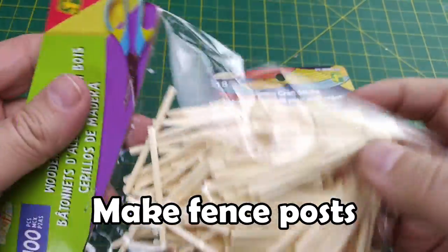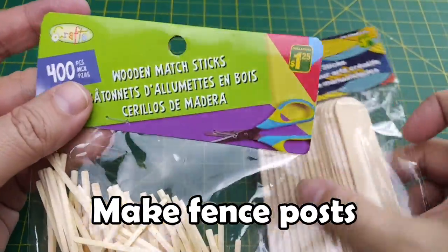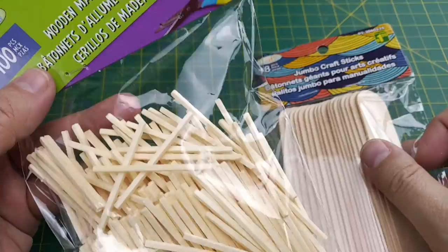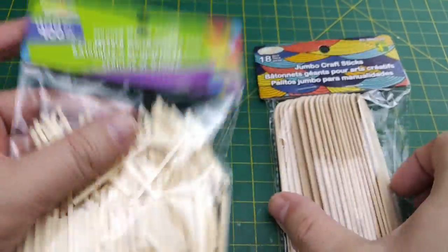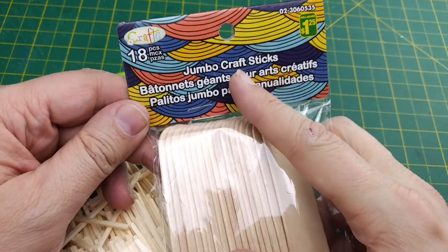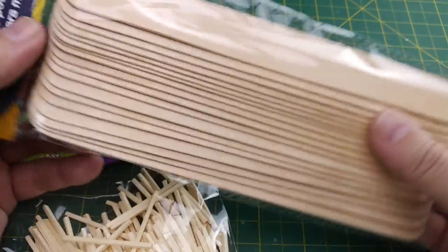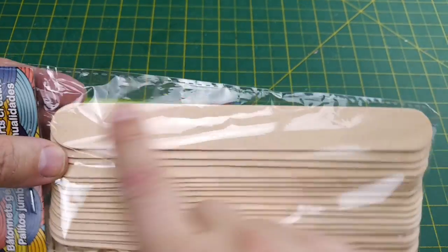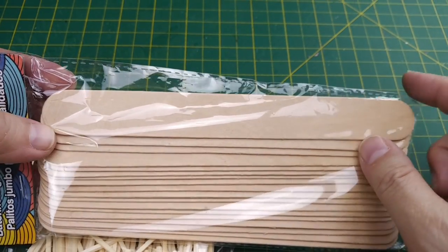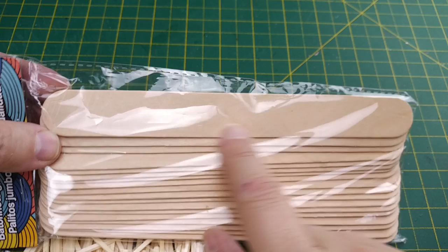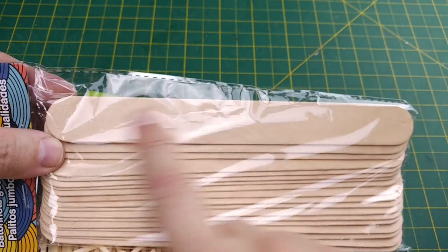Our supplies for our fences are quite basic. We have some wooden matchsticks from the dollar store. A single bag of 400 should be more than enough to create our split rail fence. We also have these jumbo craft sticks which measure about 6 inches or 15 cm long and an inch or 2.5 cm wide. These jumbo craft sticks will serve as the base for both our split rail and our wattle fences.